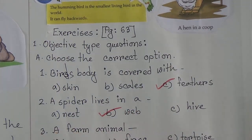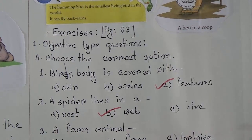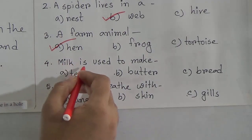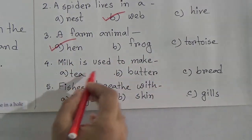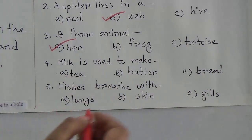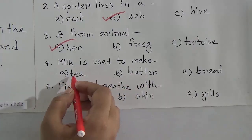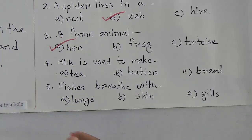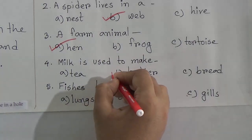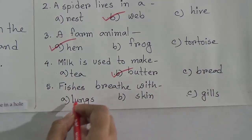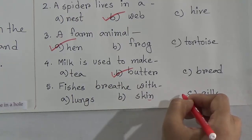Third question: a farm animal is hen, frog, or tortoise? The farm animal is hen. Fourth question: milk is used to make tea, butter, or bread? Dear students, you may say tea is also made with milk, but here we are referring to tea leaves — tea leaves are not made with milk. Butter is made with milk, so the answer is butter. Fifth question: fishes breathe with lungs, skin, or gills? The answer is gills.